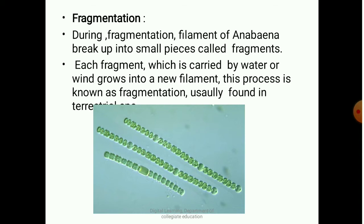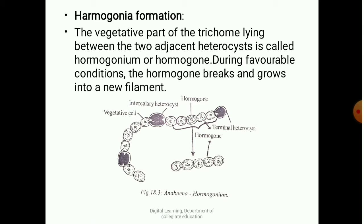The next slide shows harmogonia formation, also a type of vegetative reproduction. The vegetative part of the trichome or filament lying between two adjacent heterocysts is called a harmogonium or hormogone. During favorable conditions, this harmogone breaks free from between the two adjacent heterocysts and grows into a new filament. This harmogonium can be seen in the image labeled 'harmogonium.'